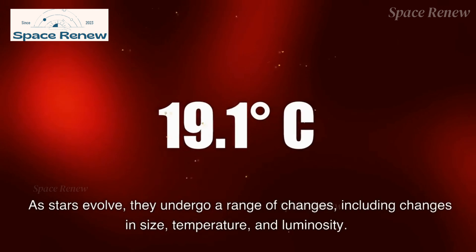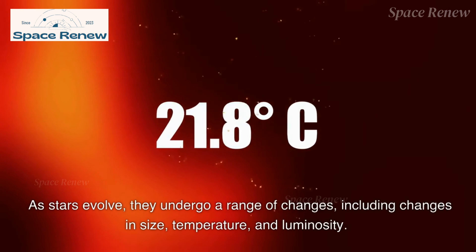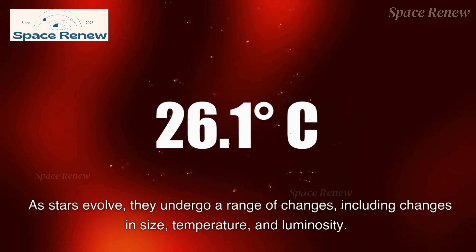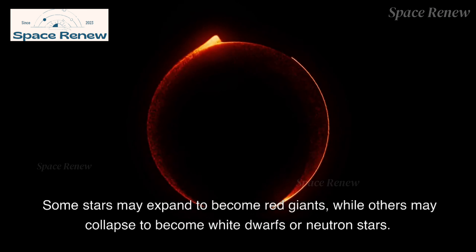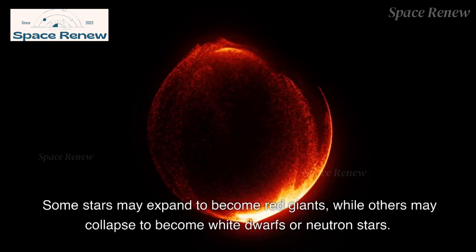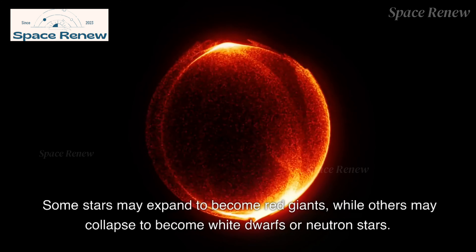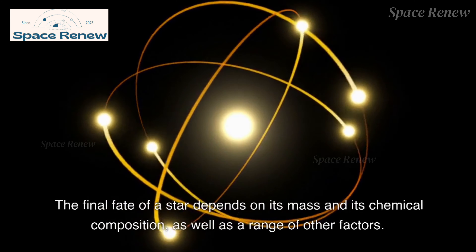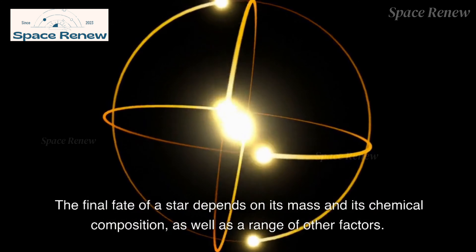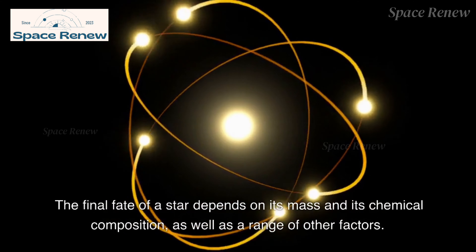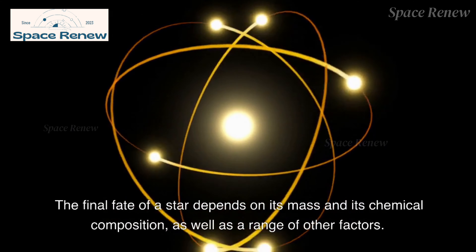As stars evolve, they undergo a range of changes, including changes in size, temperature, and luminosity. Some stars may expand to become red giants, while others may collapse to become white dwarfs or neutron stars. The final fate of a star depends on its mass and its chemical composition, as well as a range of other factors.